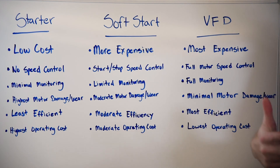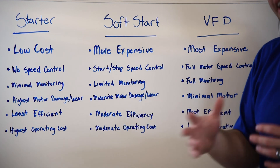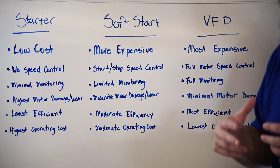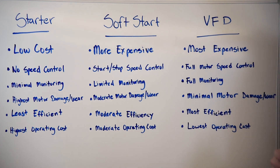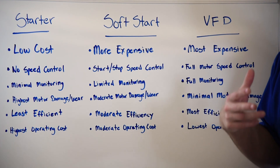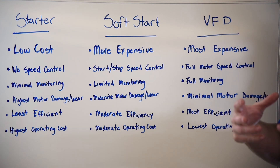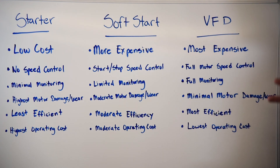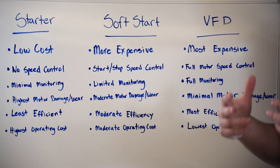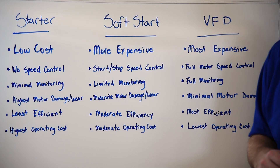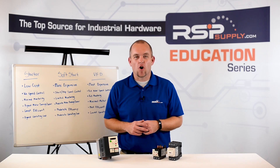Lastly, let's talk about cost savings and efficiency of using each of these options. With a starter, it is going to be the least efficient of the three options, which gives it the highest operating cost. With the soft starter, we do get a little bit more efficiency because of that slow ramp up, giving us a slightly lower operating cost. But with the VFD, we get by far the highest efficiency because of the ability to fully control the motor speed, which gives us by far the lowest operating cost of the three options.